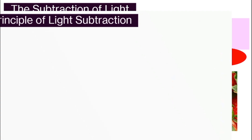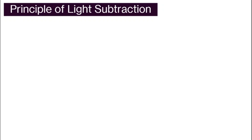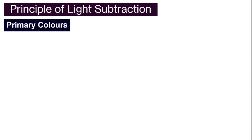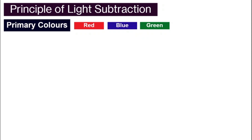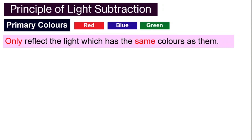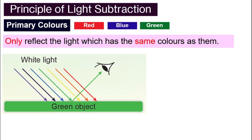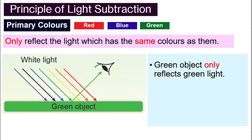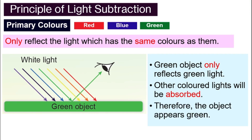Let's look at the principle of light subtraction. For primary colored objects — red, blue, and green — they will only reflect the light that has the same color as them. For example, if the object is green and white light is directed at it, only the green light will be reflected and we can see the color green. The rest of the colors will all be absorbed, and so the object appears green to us.